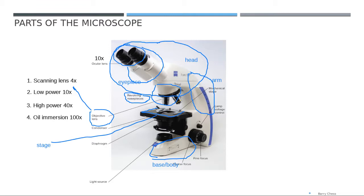On the stage you also have what we call the mechanical stage — like a clip. When we put the slide in the mechanical stage, we can control that slide to the left, right, front, or back by controlling a button. This button is called the mechanical stage controller.